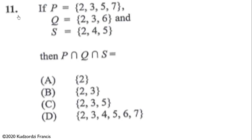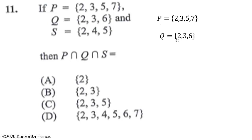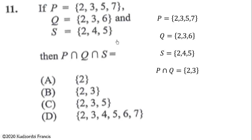We are continuing our solution of May 2019, Question 11. If P is equal to {2, 3, 5, 7}, Q is having the elements {2, 3, 6}, and S is having the elements {2, 4, 5}, we are supposed to find P intersection Q intersection S — that is, the element that is common to all of them.